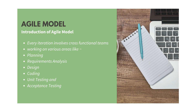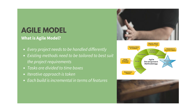A working product is displayed to the customer and stakeholders. Agile models believe that every project needs to be handled differently, and existing methods need to be tailored to best suit the project requirements. In Agile, tasks are divided into time-boxes — smaller timeframes to deliver specific features for a release. An iterative approach is taken and working software builds are delivered after each iteration, with each build incremental in terms of features.